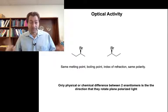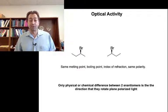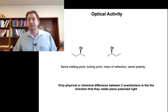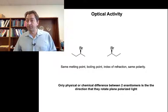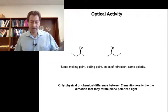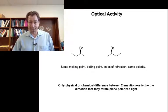The only physical or chemical difference is the direction in which each of the enantiomers rotates plane polarized light. One enantiomer will rotate it in one direction, and the other enantiomer will rotate it an equal and opposite amount in the other direction. We'll explain what this is and how we make use of this particular property.